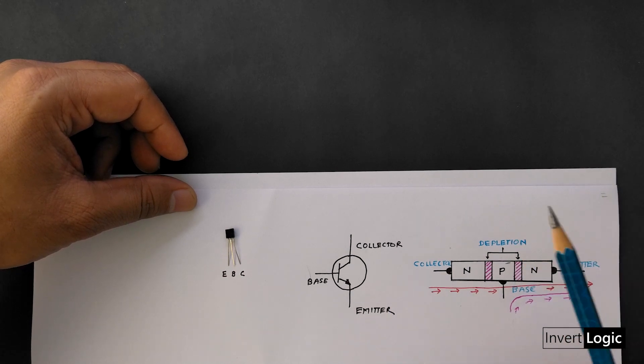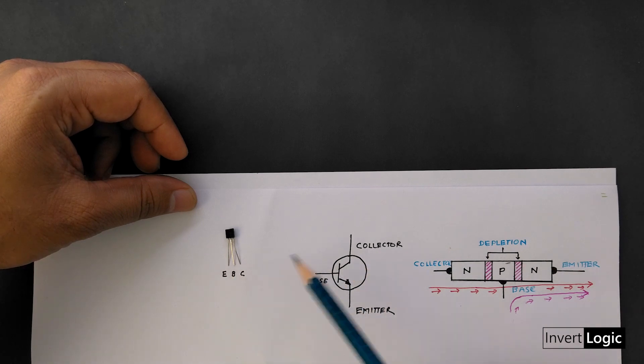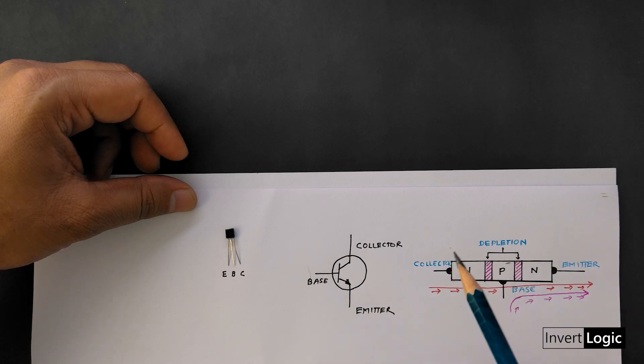As you can see in this circuit diagram of the transistor, it basically has three layers. The top one called collector, the middle one is called base, and the last one is called emitter, which is marked by this small arrow.